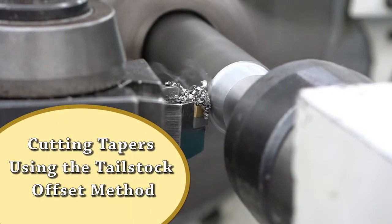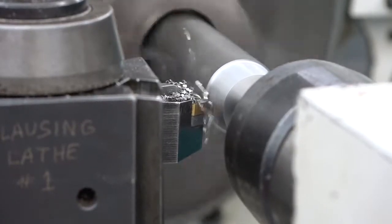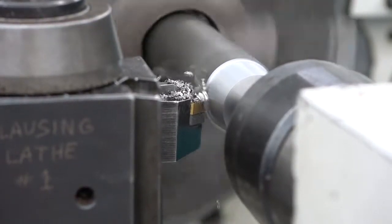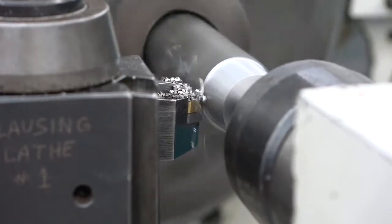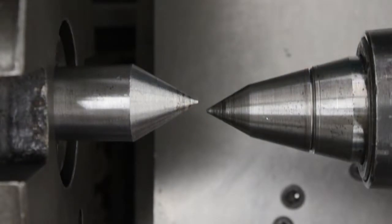Welcome to cutting tapers using the tailstock offset method. One of the more advanced procedures done on an engine lathe is cutting a taper. A taper is a uniform change in diameter at measured intervals along the length of a workpiece. Long, slight tapers can be cut on shafts placed between centers.